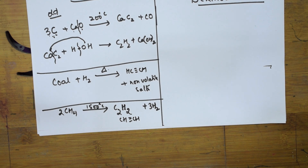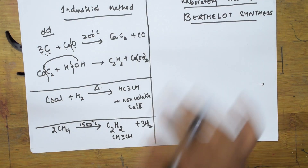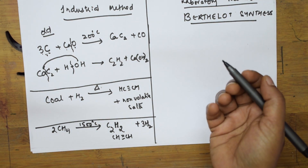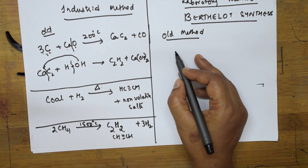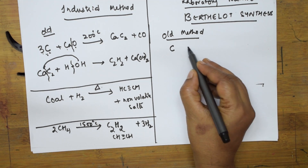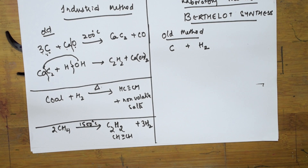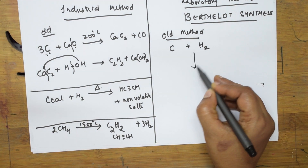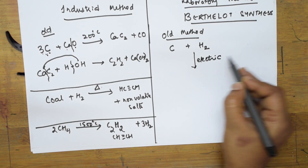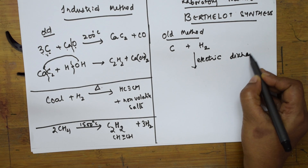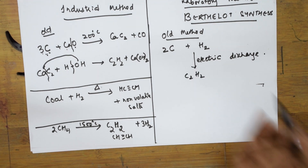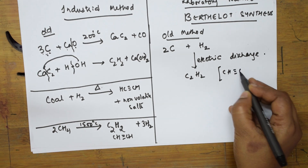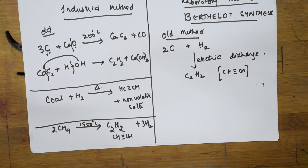Now let's look at the lab method of preparation of acetylene. Again we have an old method and a modern method. In the old method, coke is taken and heated with hydrogen in the presence of an electric discharge. Taking two carbons of coke, this gives C2H2 — acetylene. This is the old and simplest lab method.